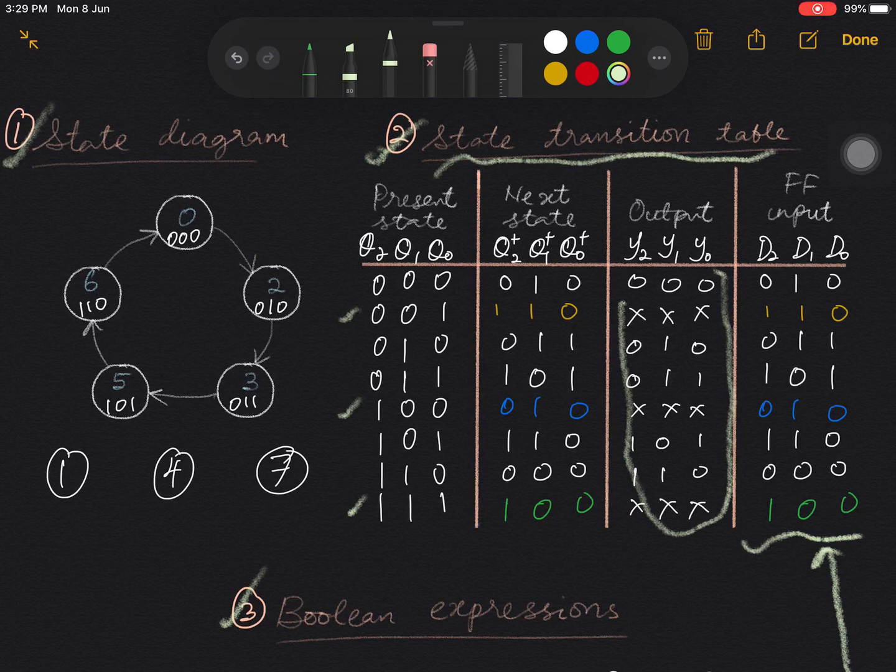Okay. Now we can update the state diagram by including the transition of the unused states. So from the updated state transition table, we can see that 1 goes to 6, 4 goes to 2, and 7 goes to 4.